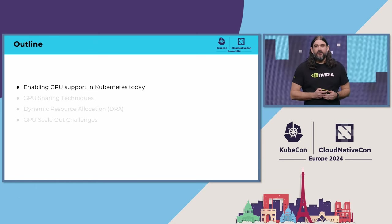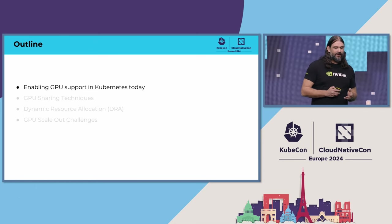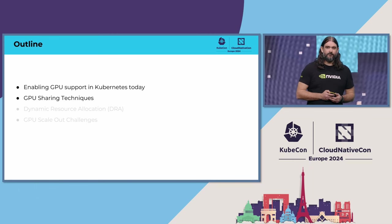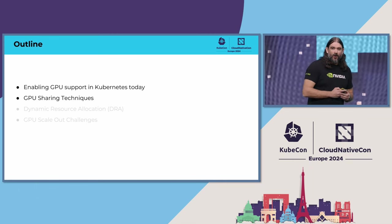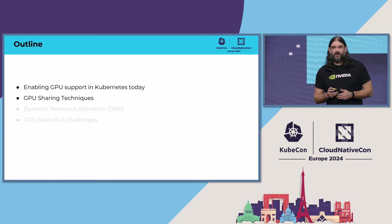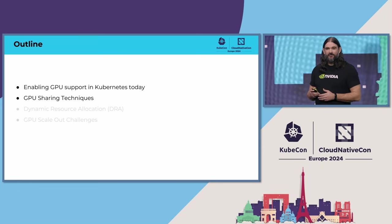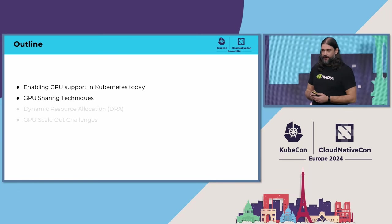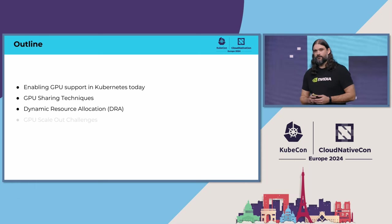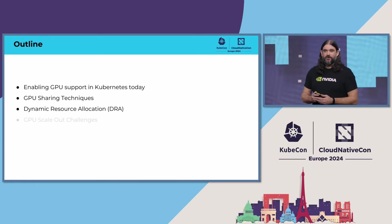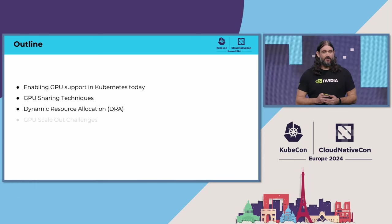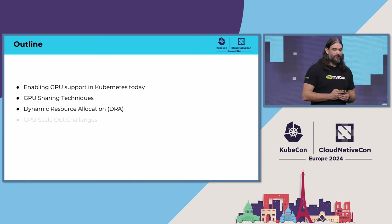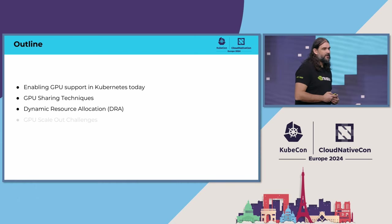To kick things off, I'm going to start with a brief overview of what it takes to enable GPU support in Kubernetes today. I'll then jump into the details of one very specific use case that could benefit from non-fungible and non-exclusive resources, namely GPU sharing. I'll then introduce a new feature called Dynamic Resource Allocation, or DRA for short, which we see as the enabler for taking GPU support in Kubernetes to the next level.